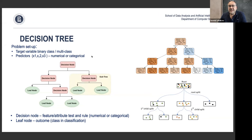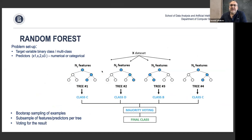Decision trees are good for understanding how algorithms work and are quite explainable. However, in real life we rarely use single decision trees — they are not very precise and often overfit the data. The solution is to use a forest of trees instead of a single decision tree — for example, a random forest.